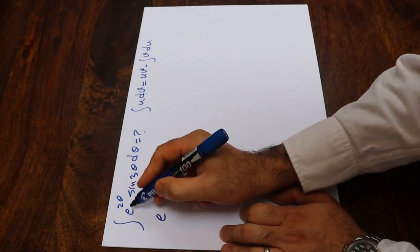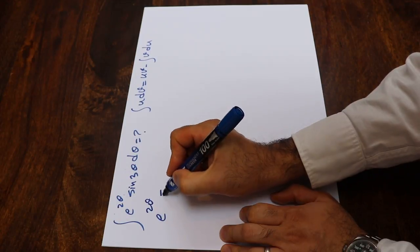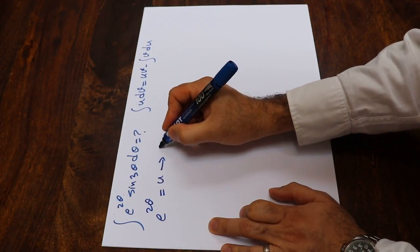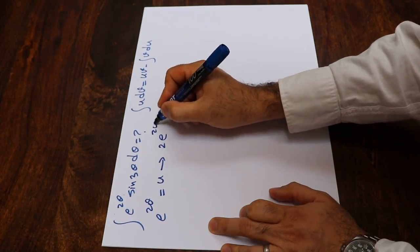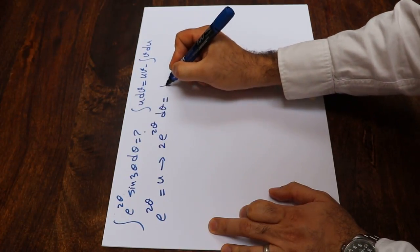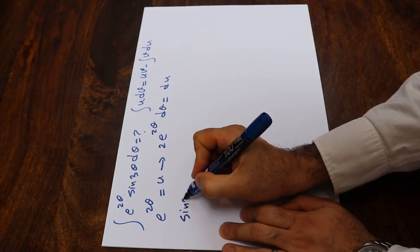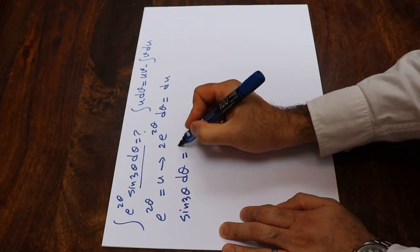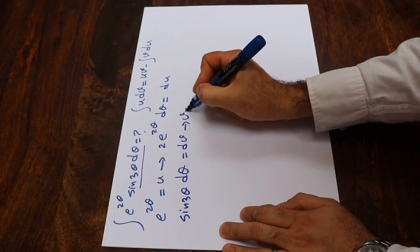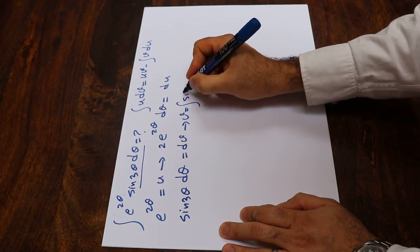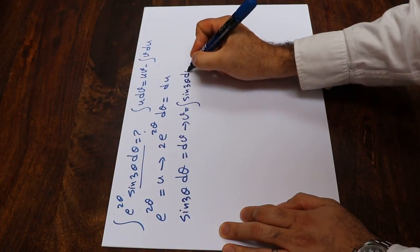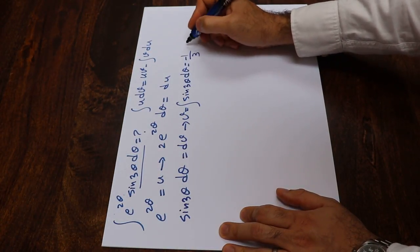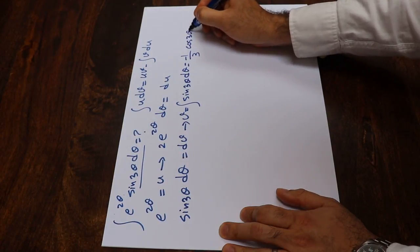Here, if I define e to the power of 2θ as U, and take the derivative from each side, we get 2e^(2θ) dθ equal to dU. And we define sine 3θ dθ as dV, therefore V equals the integral of sine 3θ dθ, which equals minus 1/3 cosine 3θ.